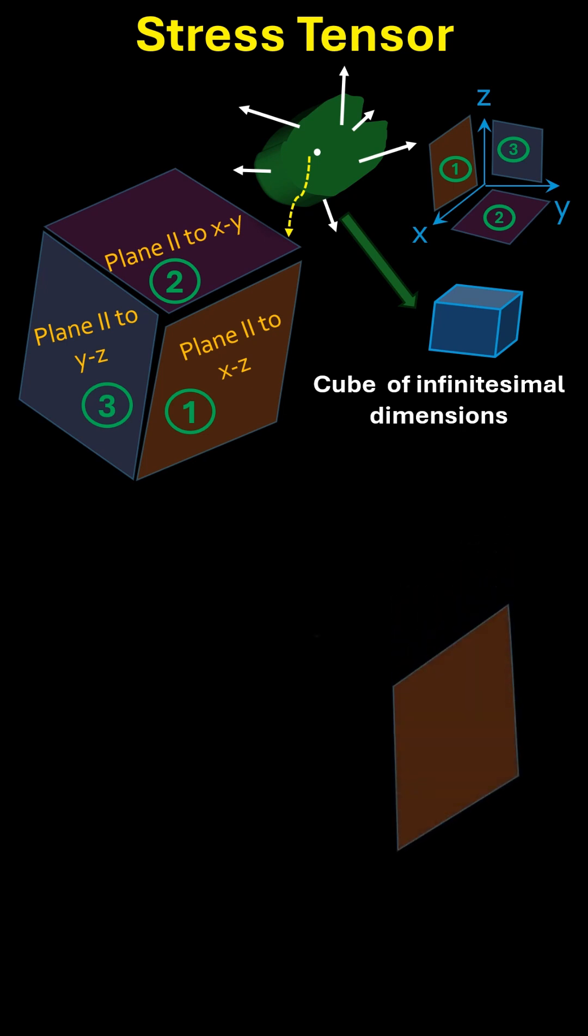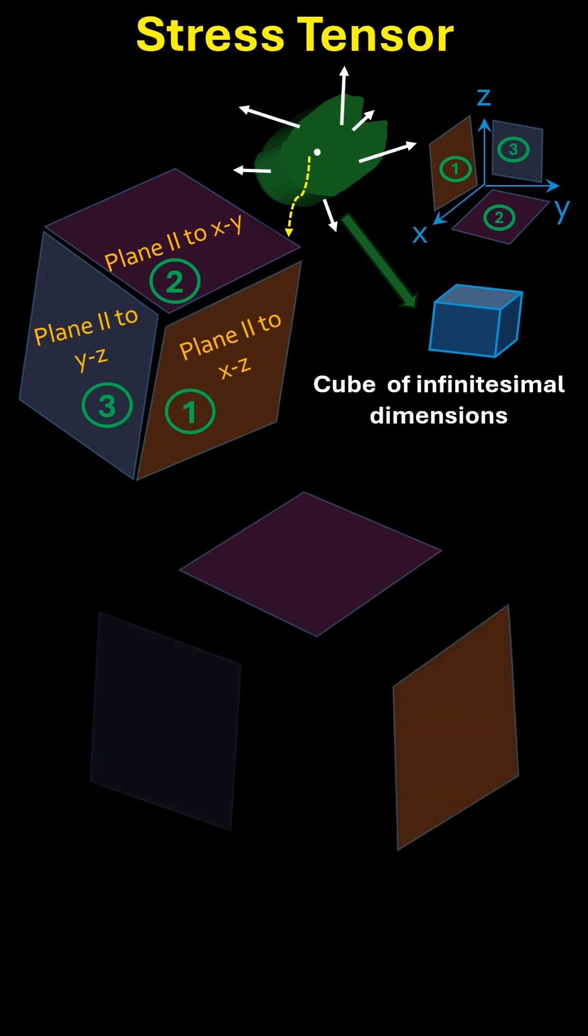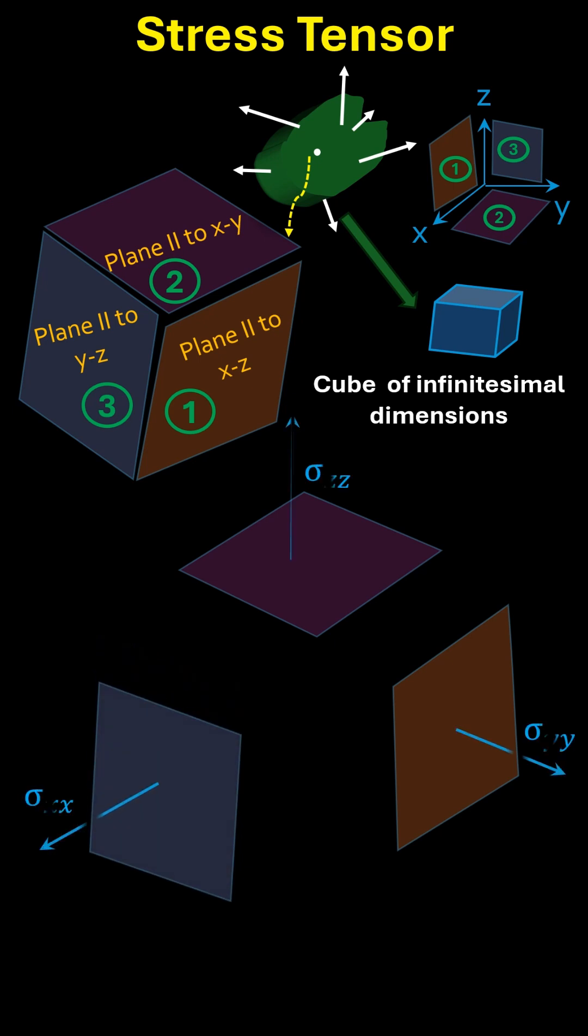On every face of this cube, stress components act in two ways. First, normal stress denoted by σ, acting perpendicular to the plane. And second, shear stress denoted by τ, acting parallel to the plane.